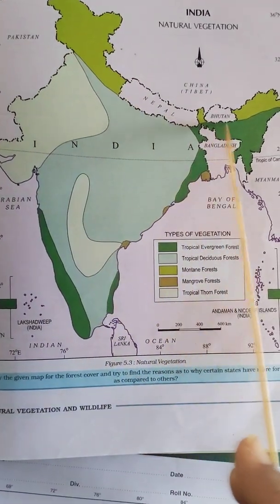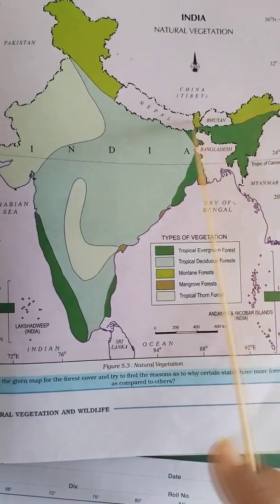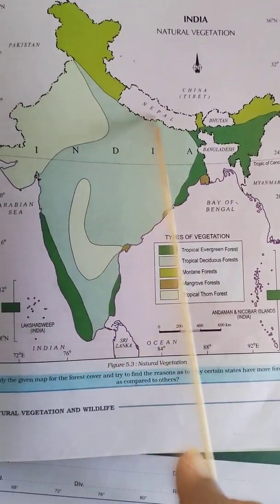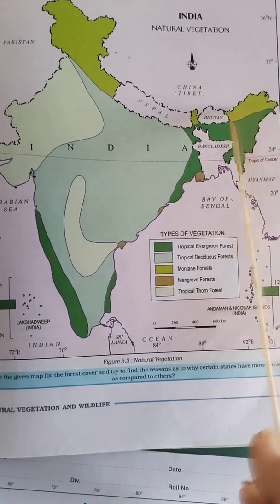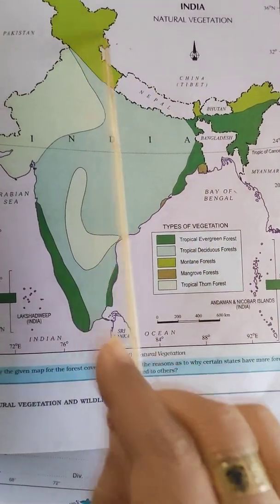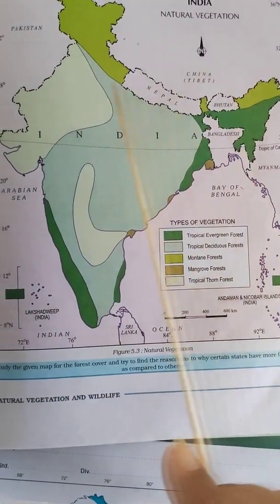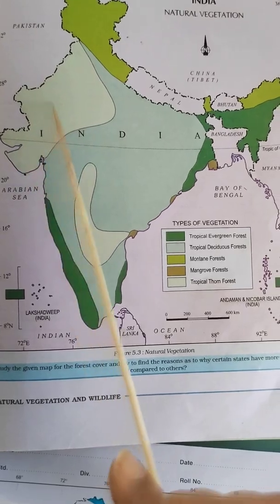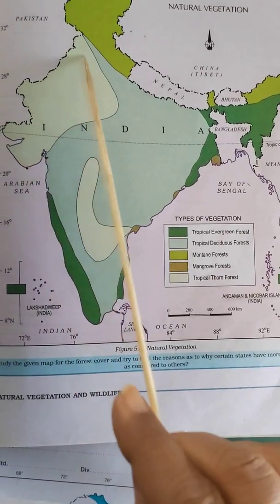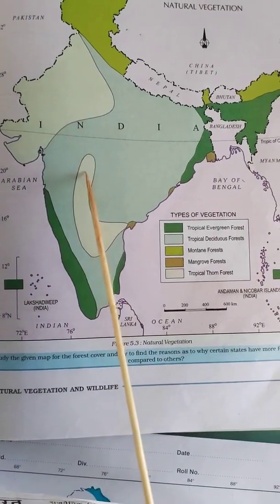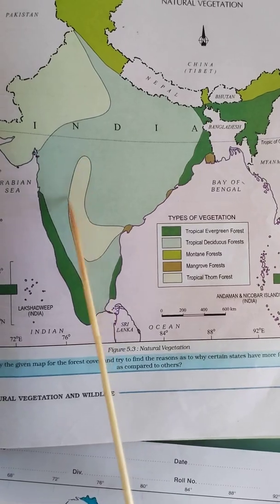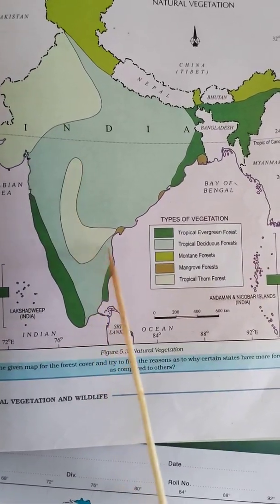Mountain forest is found in the Himalayan mountain ranges occupying the northern and northeastern parts of India. Thorn and scrubs are found in rain shadow areas.